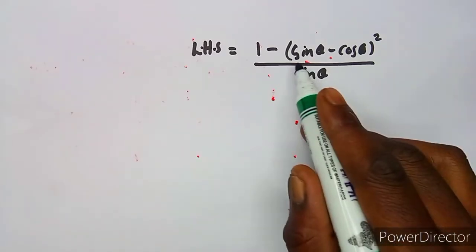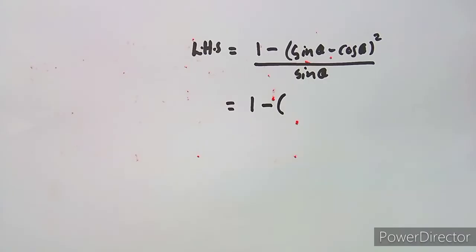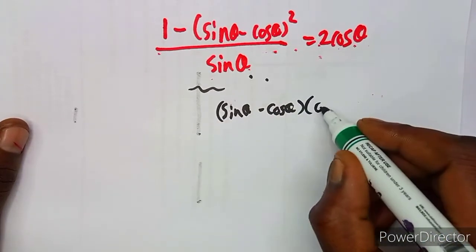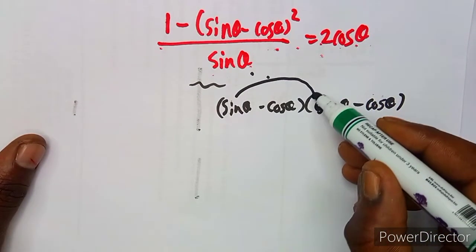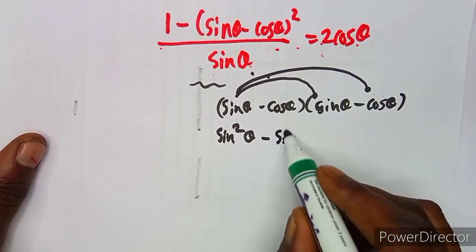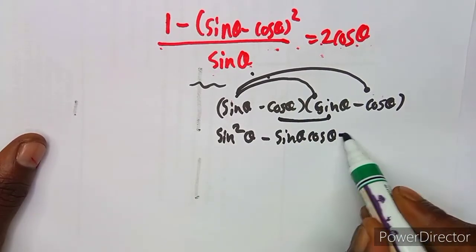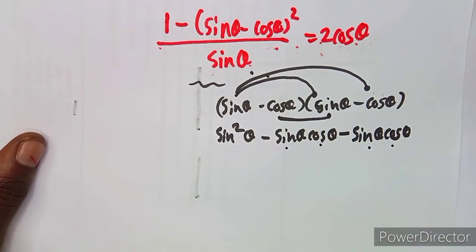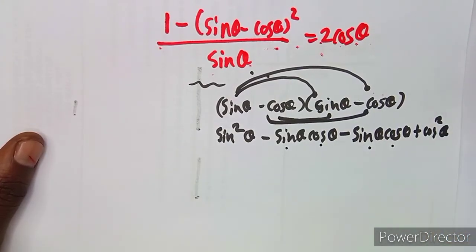There is a bracket raised to the power of two, so I have to expand it. Multiplying out: sine theta minus cos theta, times sine theta minus cos theta. That gives us sine squared theta, then sine times cos which is minus sine theta cos theta, then cos times sine which is another minus sine theta cos theta.